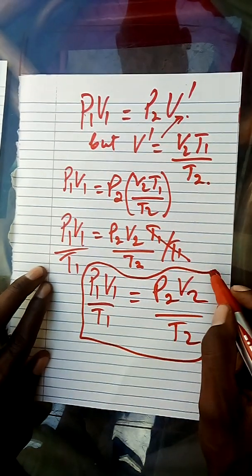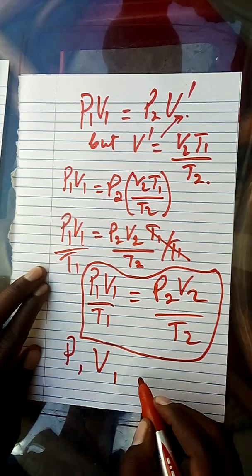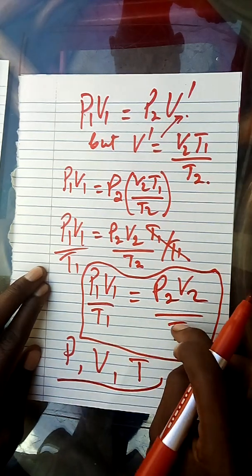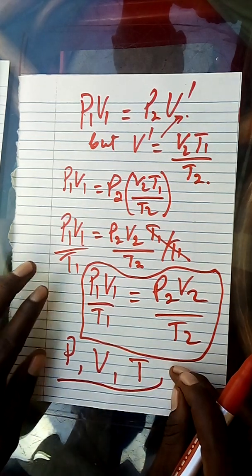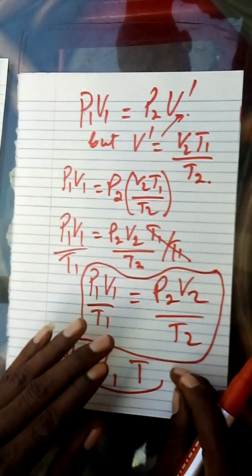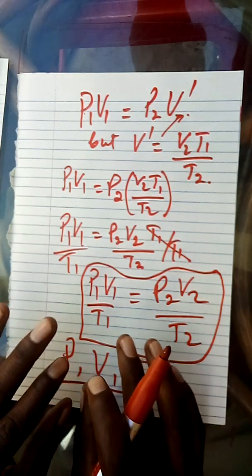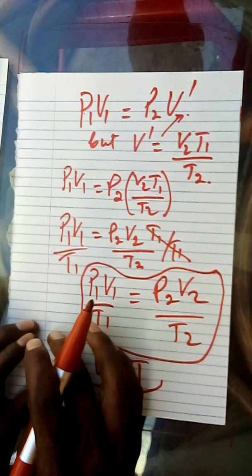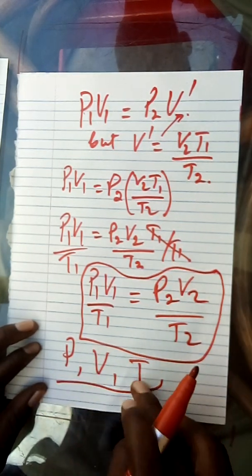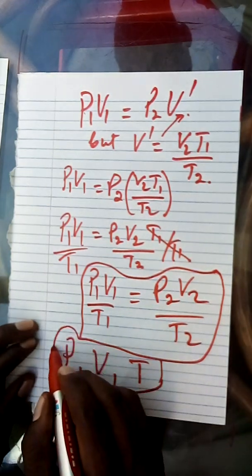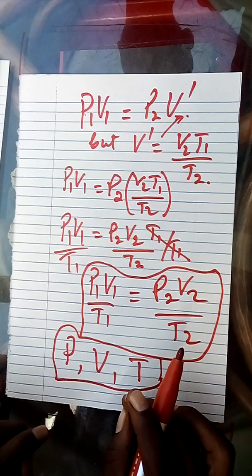This is the general gas equation. It is used to solve problems that include all the factors — that is, pressure, volume, and temperature — when both of them are varying. For Charles' law, we talked only about volume and temperature. For Boyle's law, we talked about pressure and volume at constant temperature. For the pressure law, we talked about pressure and temperature at constant volume. But here, all factors are varying — increase or decrease in pressure, volume, and temperature — so we use the general gas equation to find what is missing. Now let us see an example on how we can apply this.